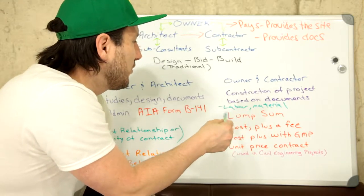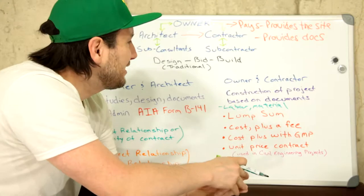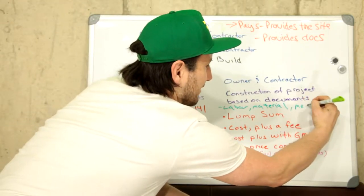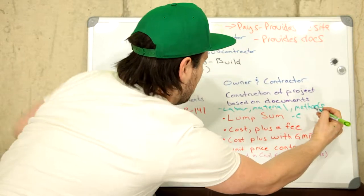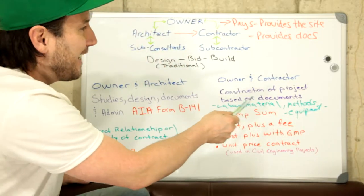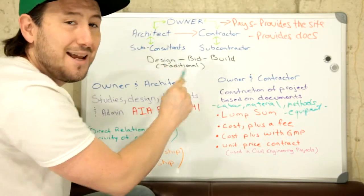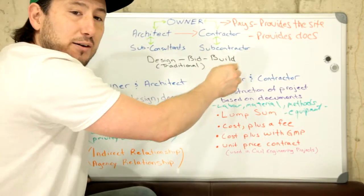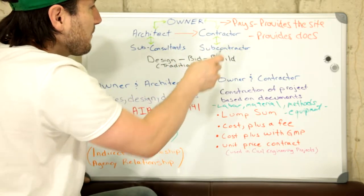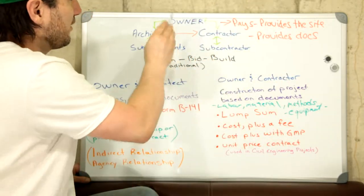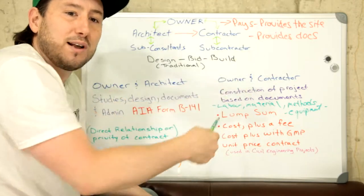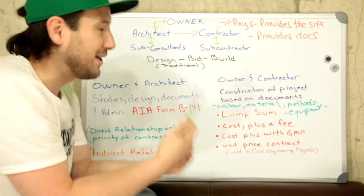The contractor will supply all the labor and materials to build the project. They're also going to provide the project sequencing and arrange the methods and practices for delivering the work — including what equipment is used. The contractor is responsible for paying for everything inside the construction project. The owner doesn't directly pay the subcontractors; the owner pays the contractor one payment, and the contractor then divides it up between equipment, labor, materials, subcontractors, rentals, and all that.